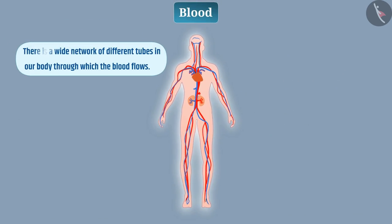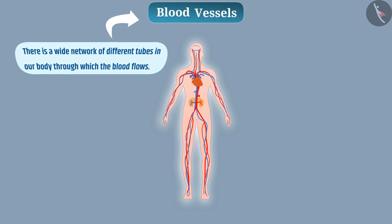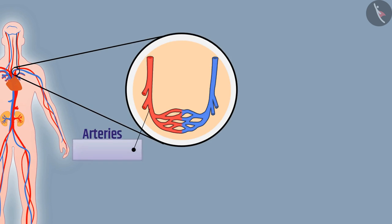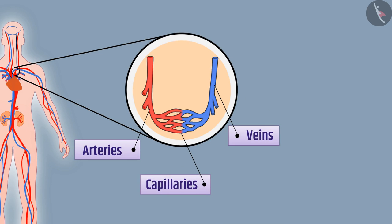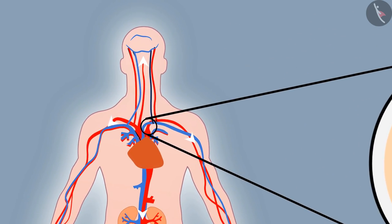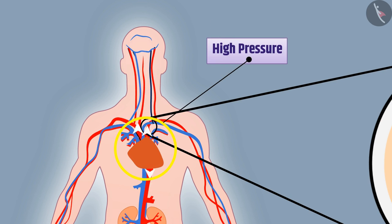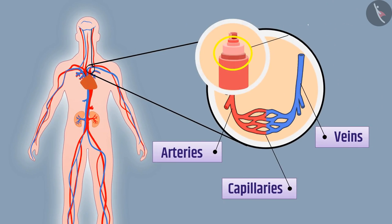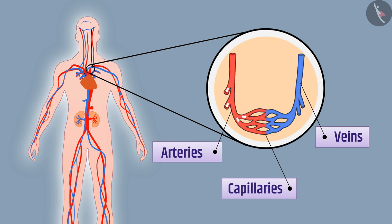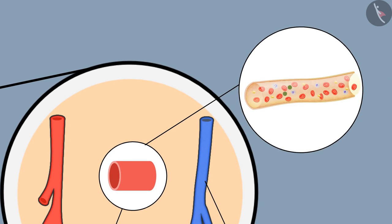There is a wide network of tubes in our body through which blood flows, called blood vessels. There are three types: arteries, veins, and capillaries. Arteries carry oxygenated blood from the heart to various parts of the body with high pressure, so their walls are thick and flexible. Each artery divides into smaller vessels; the wall of the smallest vessel is unicellular, allowing easy exchange of substances between blood and cells.